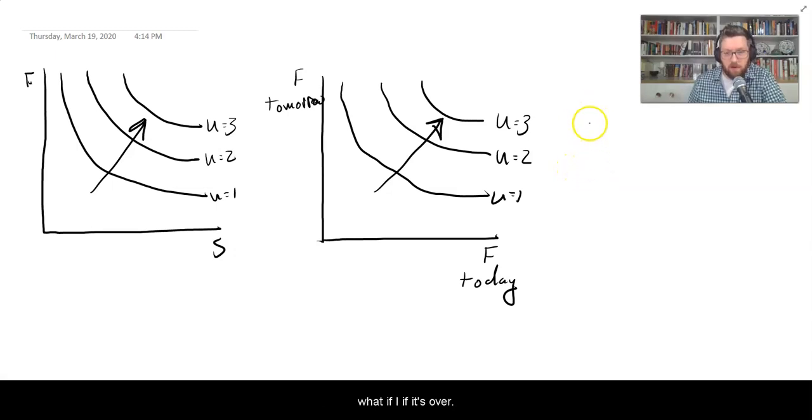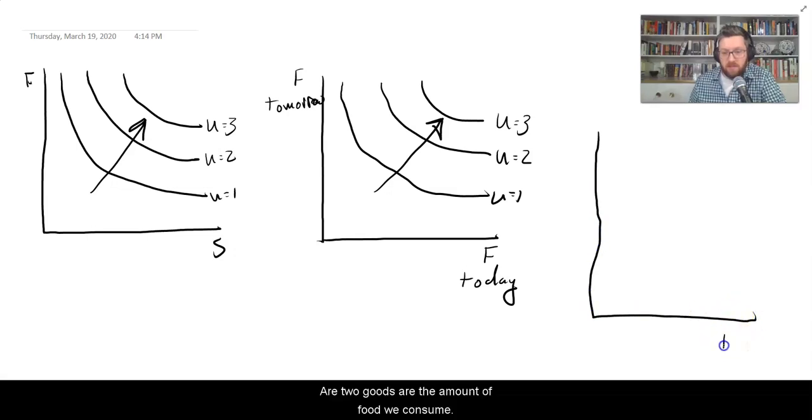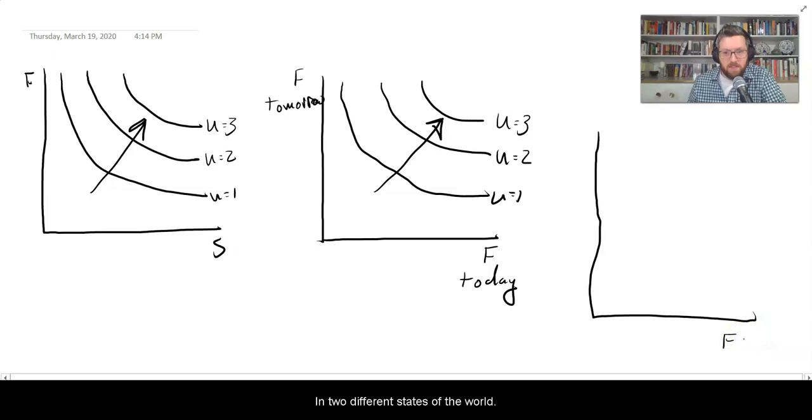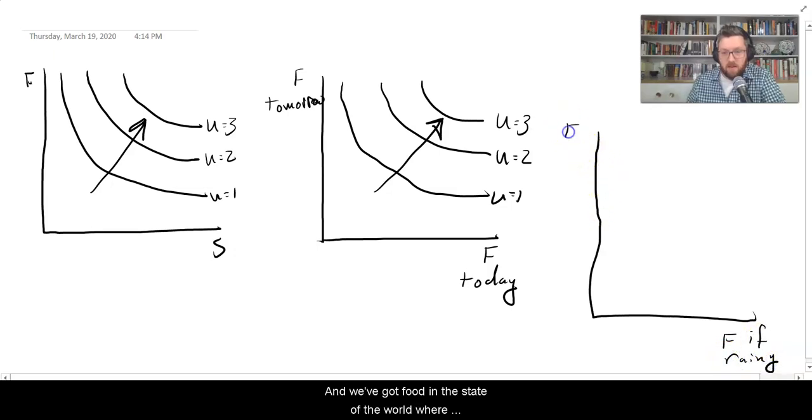What about if it's over, how do we deal with uncertainty in this? Well, now our two goods are the amount of food we consume in two different states of the world. So we've got food in the world where it's rainy or we have a good rain and we've got food in the state of the world where there's a drought. And as before we can draw just utility preferences and indifference curves over these states of the world.